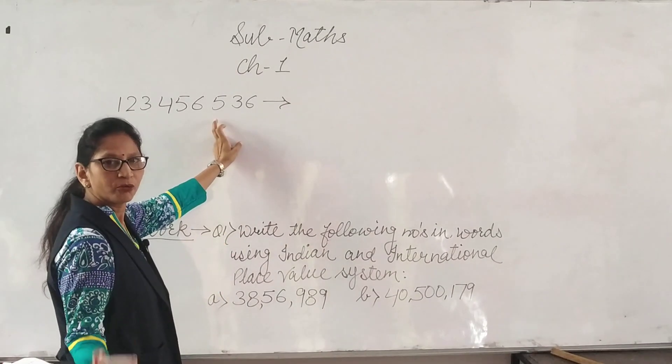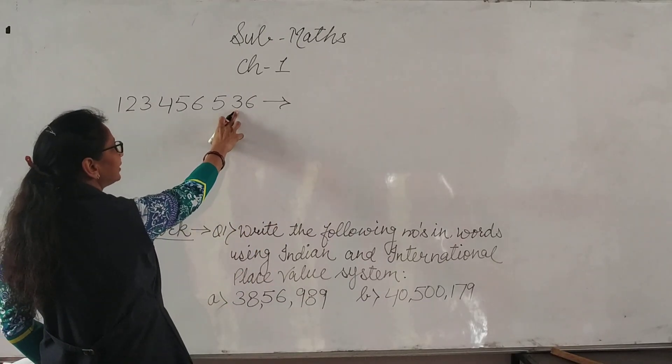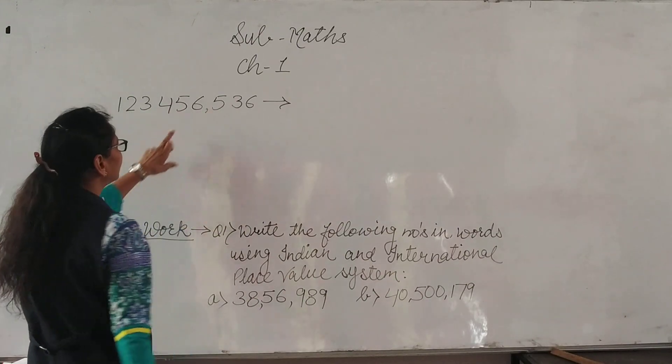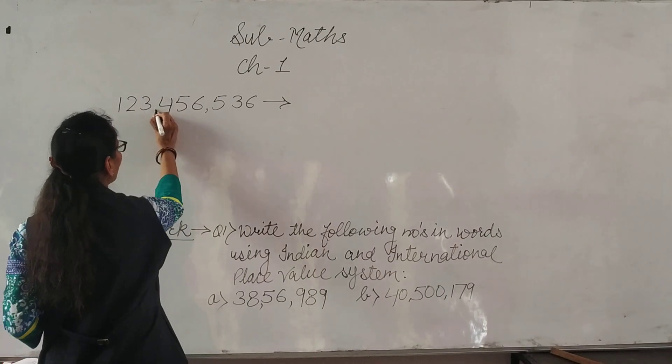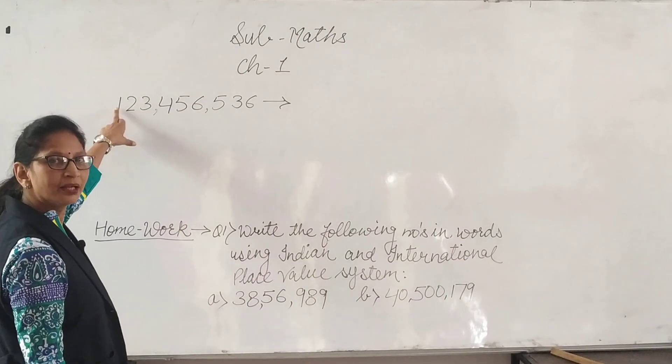First, we put comma. Ones, tens, hundred, we put comma here. Thousand, ten thousand, hundred thousand, again we put comma here. And this is million, ten million, and hundred million.